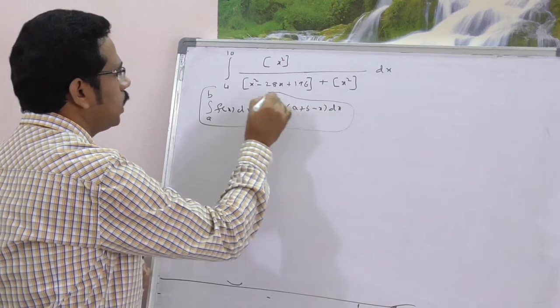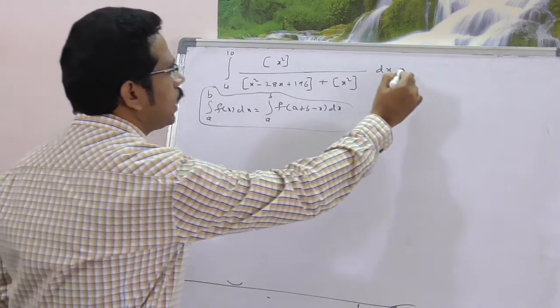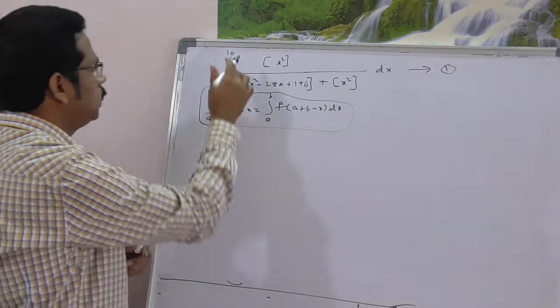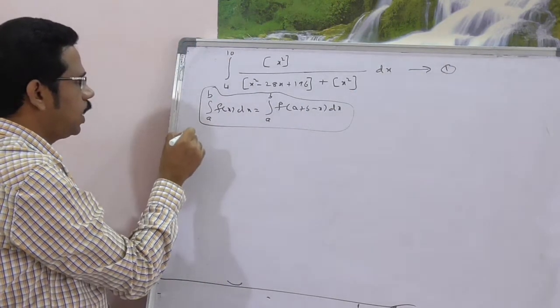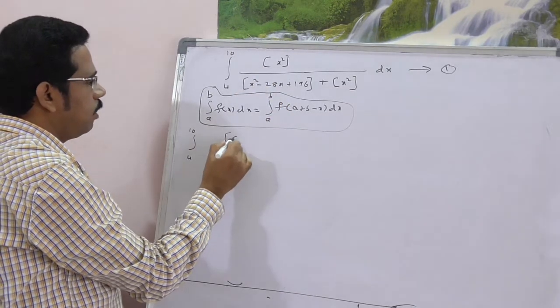Just use this formula here. Let the given question be equation 1. Just apply this. Integral 4 to 10, a plus b minus x, that is the numerator, a plus b is 4 plus 10 minus x whole square.